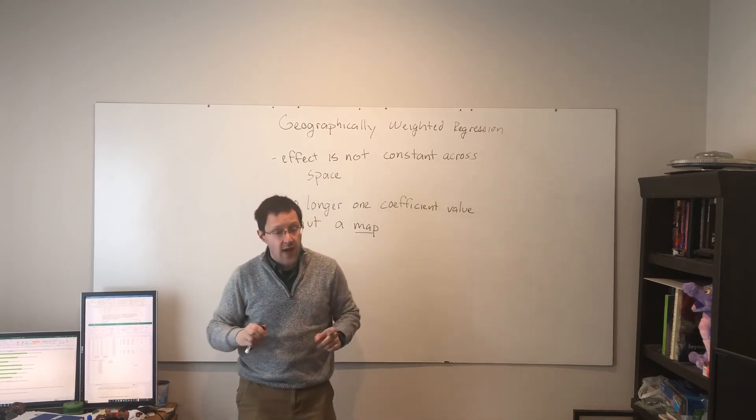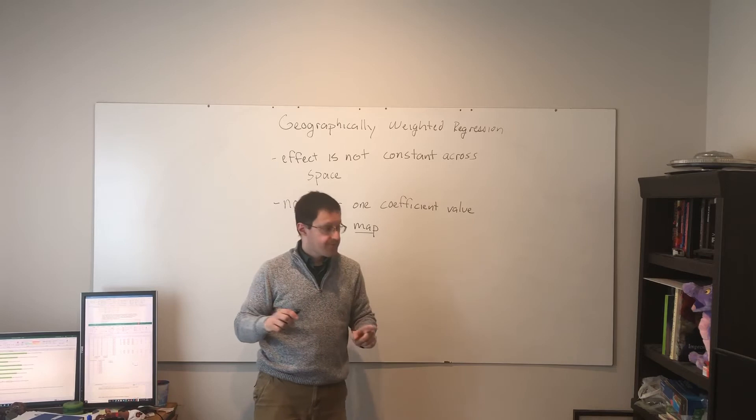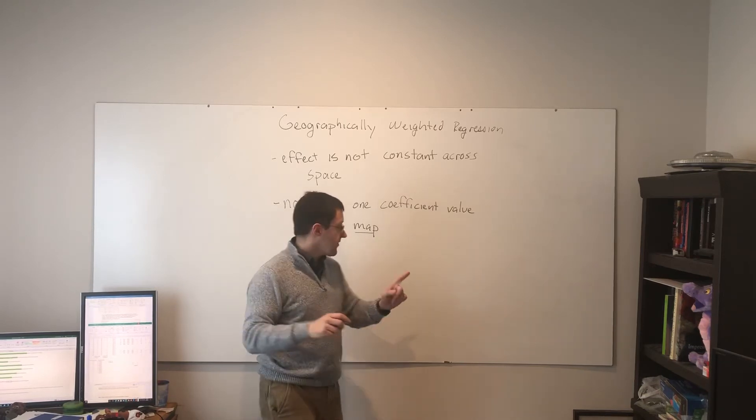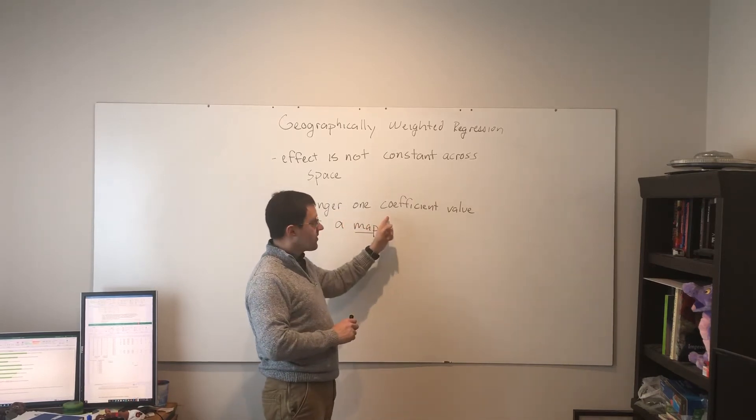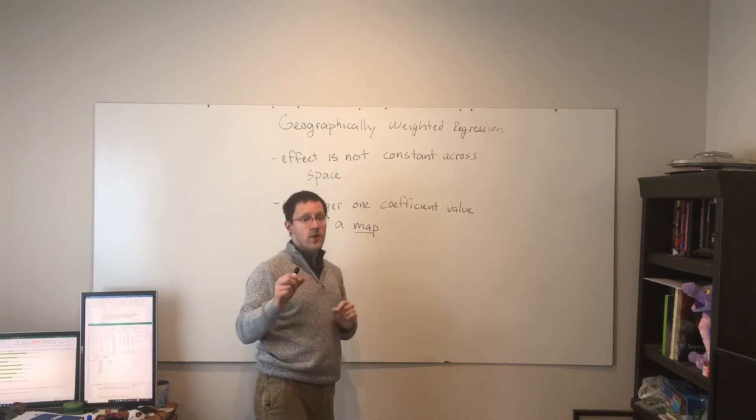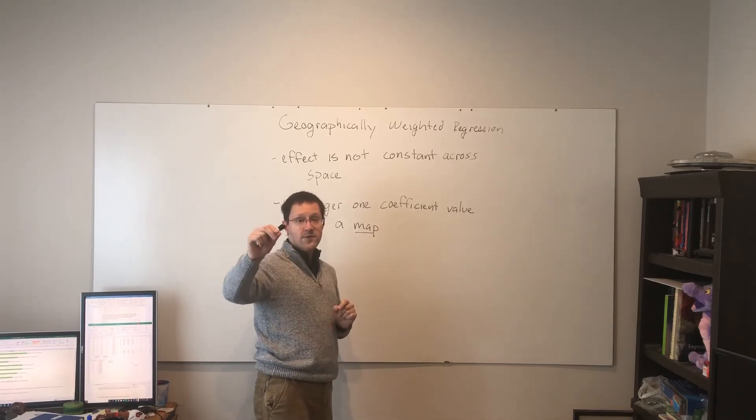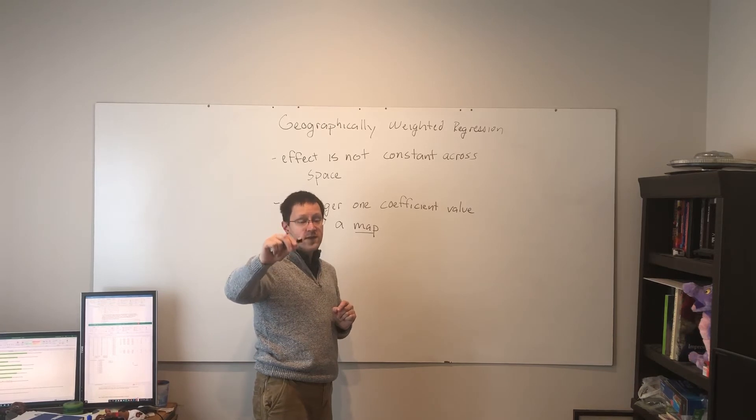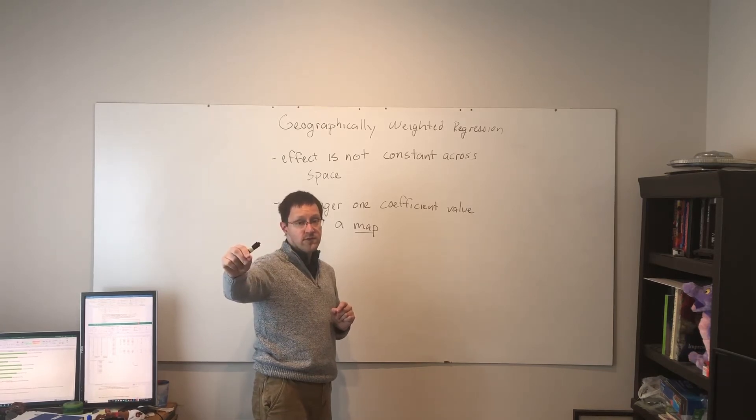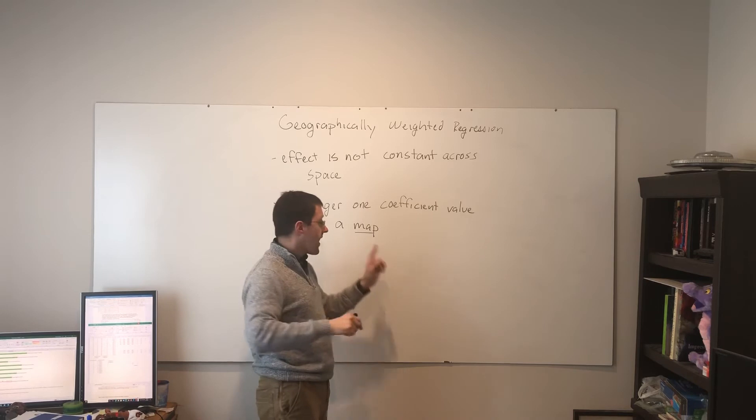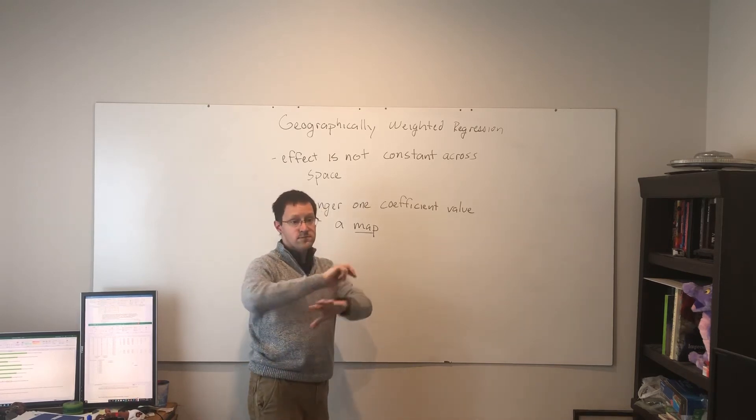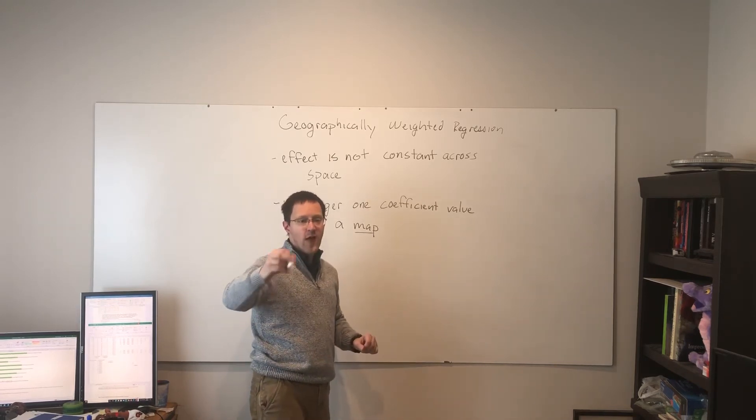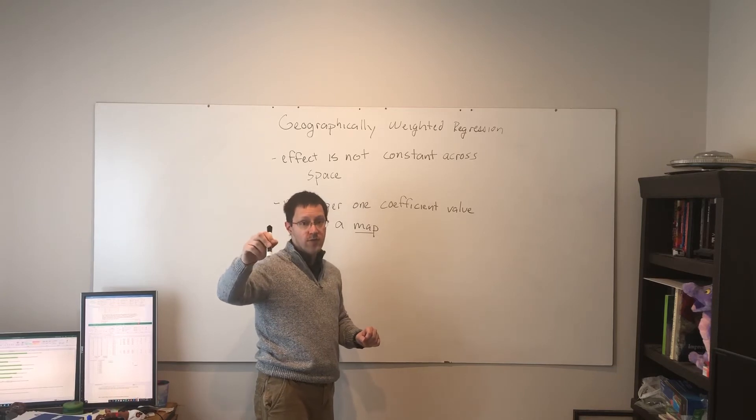So, to represent that, what we do is we're not going to have a single coefficient value. We're not going to have just the effect of income on health insurance. No, we're going to have a map of how that effect, how that coefficient changes from one place to the next.